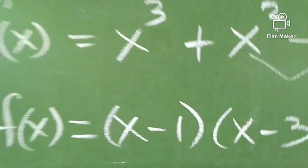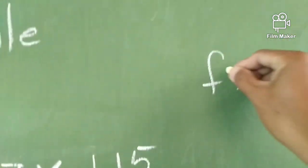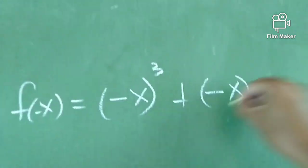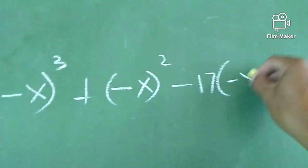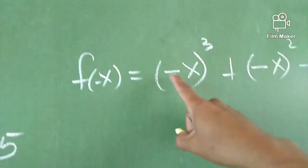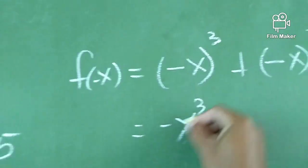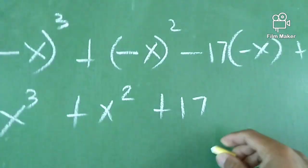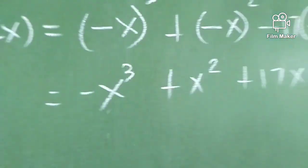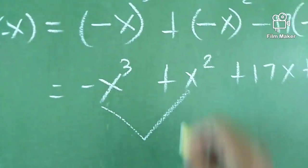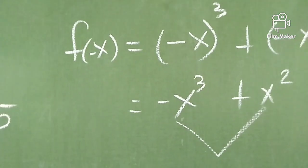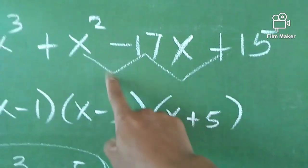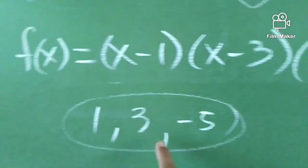Let's try it with negative x. f(-x) = (-x)³ + (-x)² - 17(-x) + 15. Simplifying: -x³ stays negative, -x² becomes positive, then +17x, and copy +15. We noticed one interchange of sign here. So, meaning to say, our estimate was correct: we have 2 positive real zeros — which are 1 and 3 — and 1 negative real zero, which is -5.